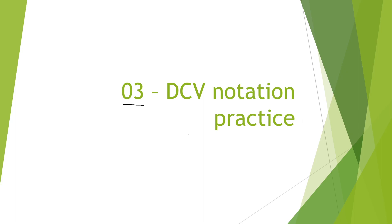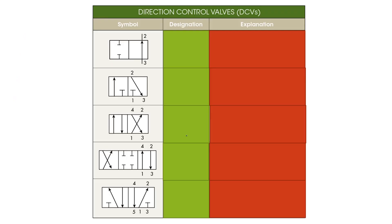So let's start the practice. Here we have five directional control valves and we are going to analyze them together. In our last lesson we said that directional control valves are marked with two numbers, x slash y, in this format.